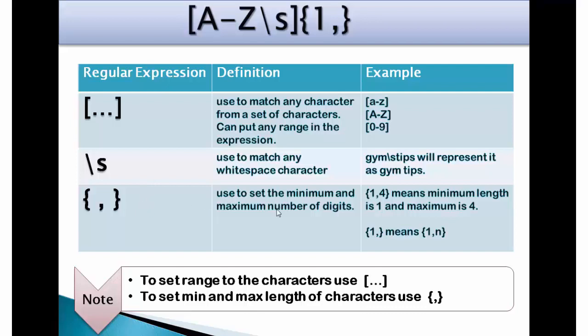I have already discussed about these three dots and backslash s. Now coming to brace, its function is that it reads the minimum and maximum number of digits within the brace. For example, if you put 1 comma 4 it means minimum length allowed is 1 and max is 4. If you don't put any digit after 1 like 1 comma brace close it means n digits. Difference between square brackets and brace is that square bracket is used to set range to the characters and brace is used to set minimum and max length.